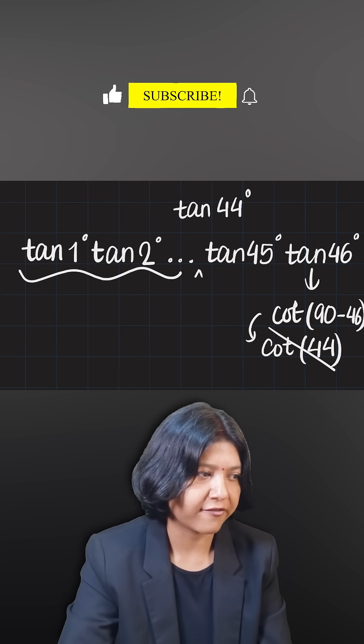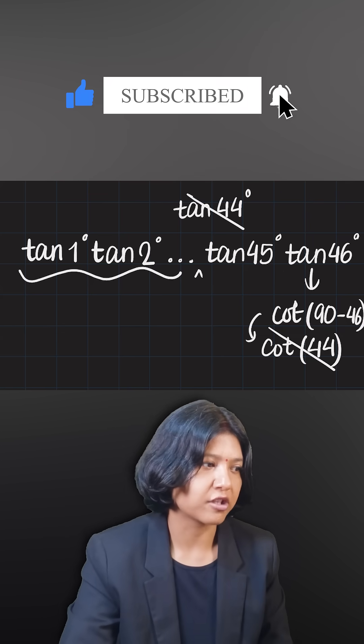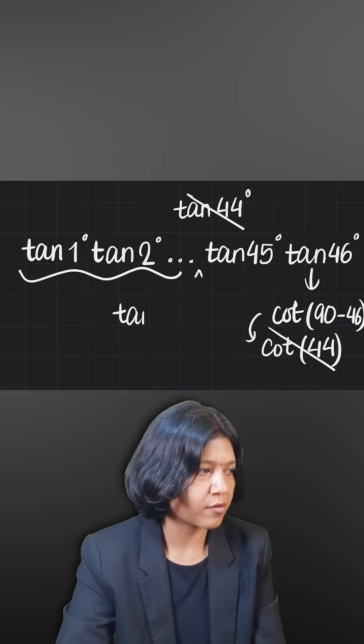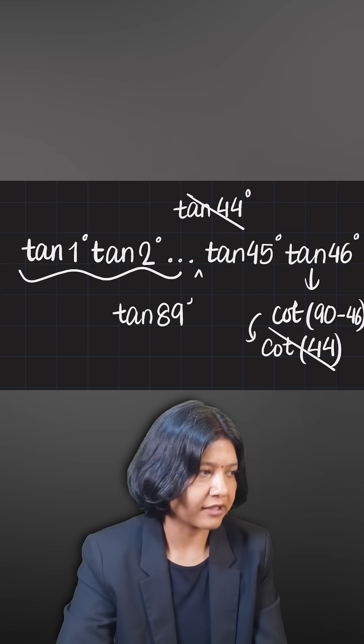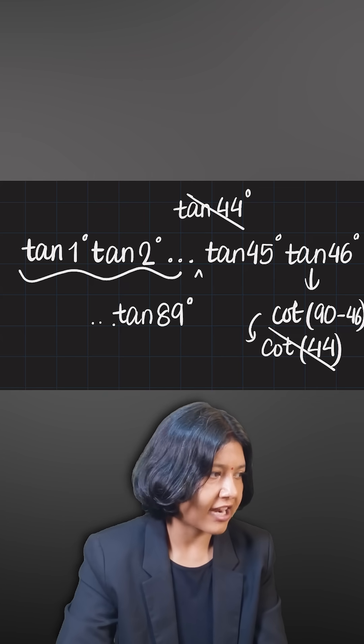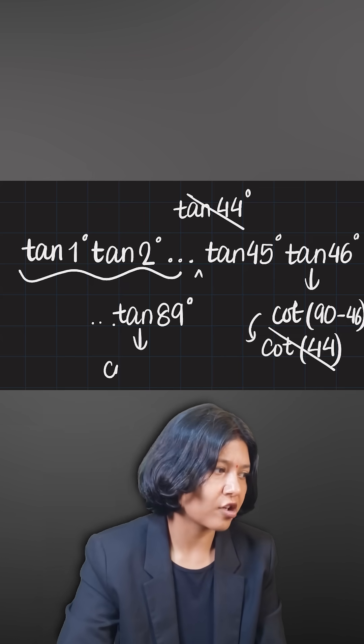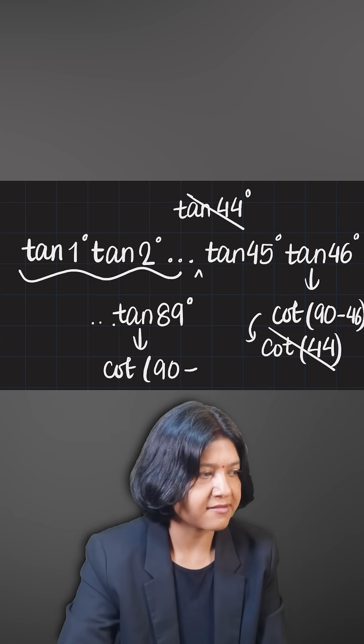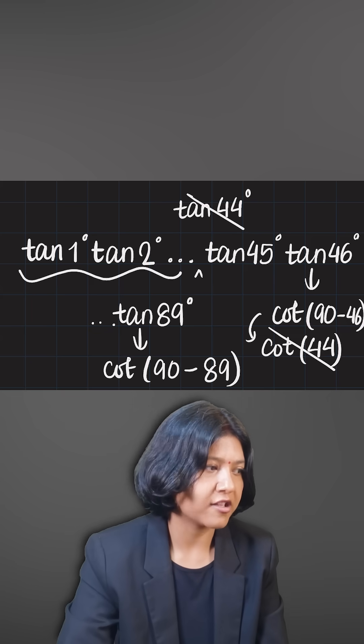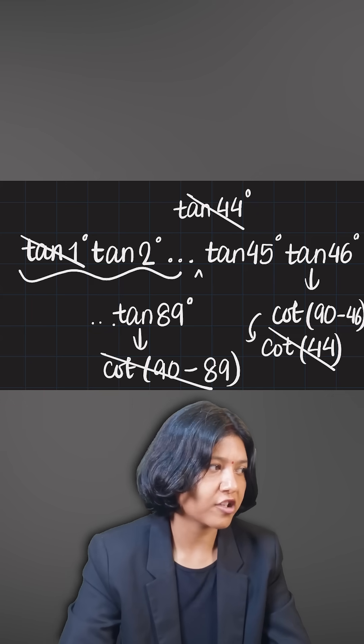This way you'll realize that you'll have each pair canceling out: tan 44 with cot 44. The last term, tan 89, which you're going to get in this expansion, can be written as cot of 90 minus 89. 90 minus 89 is 1, giving you this term canceling out with the first term.